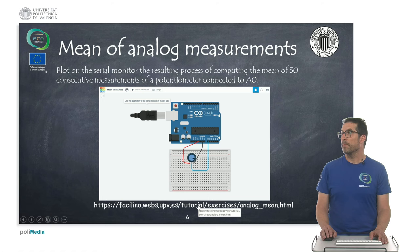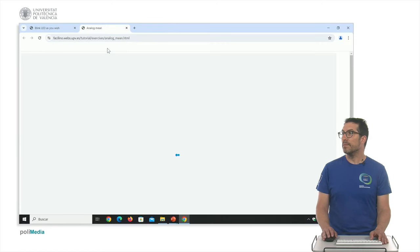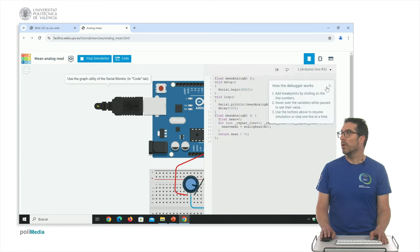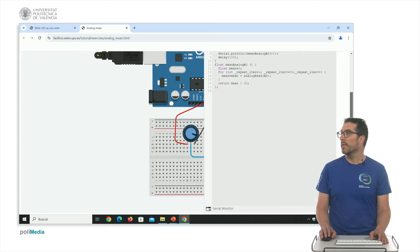So if we show here the exercise, you will see again, let me open the console. You will see here in the serial monitor that the values are not, in this case, integrous anymore but are real numbers.